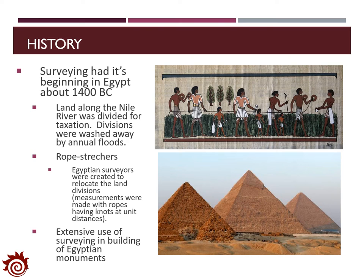Now let's take a look at a brief history about surveying, especially the implementation and development of surveying over the past several thousand years. Surveying implementation can be traced back to 1400 BC in Egypt, where land division was very popular. The land along the Nile River was divided for taxation, but those divisions were washed away by floods every year. Egyptian surveyors were created to relocate the land divisions using rope structures — ropes having knots at unit distances. Many people believe this technology was also applied to build the pyramids in Egypt.